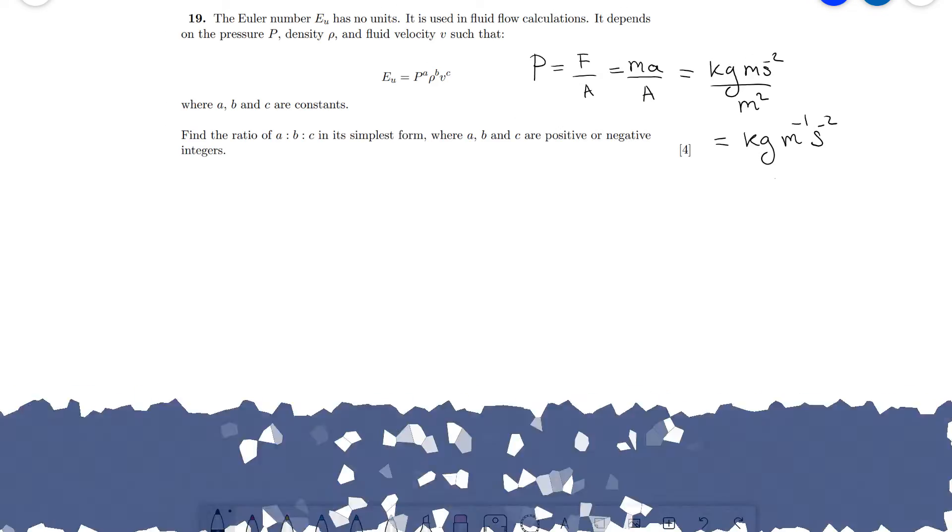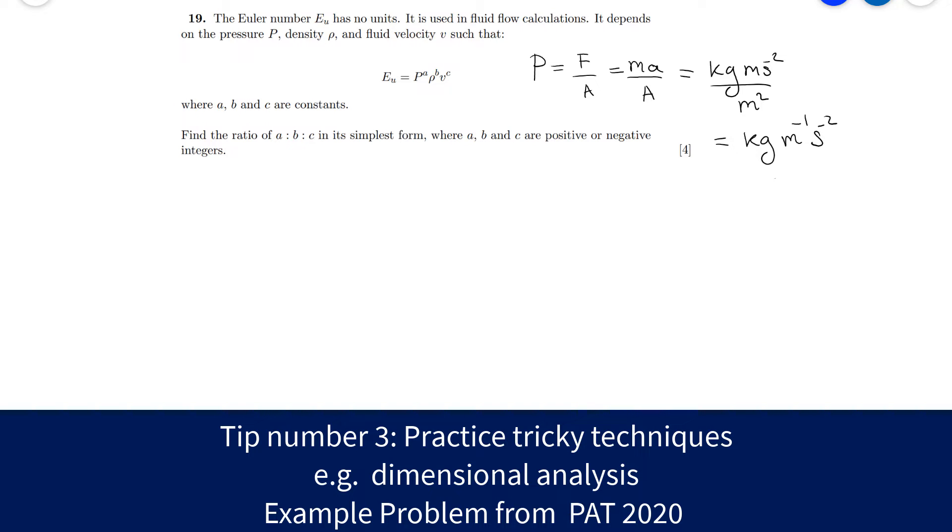My third tip is to practice using dimensional analysis. This is a technique that is not so often used in A-level, however, it heavily features in Physics Olympiad problems and admission tests. As an example, I'm going to show you guys the 2020 PAT, one of the questions from the 2020 PAT examinations for Oxford. This is question 19.